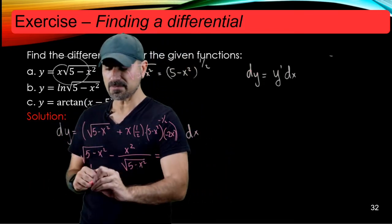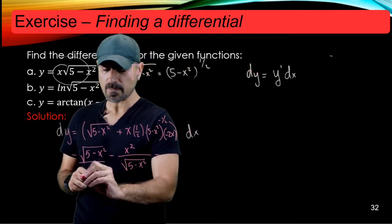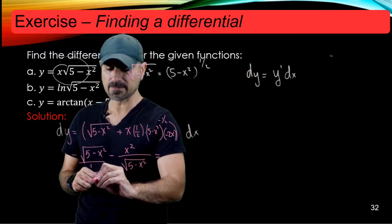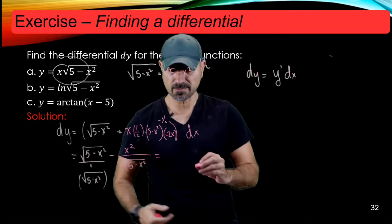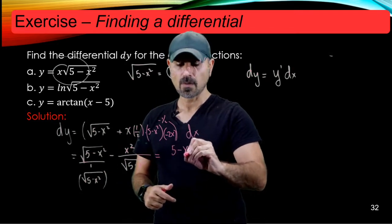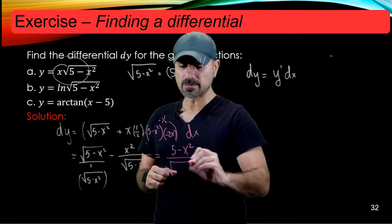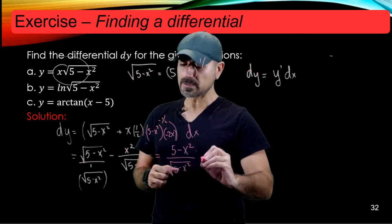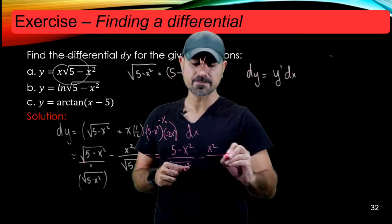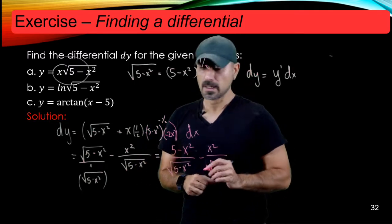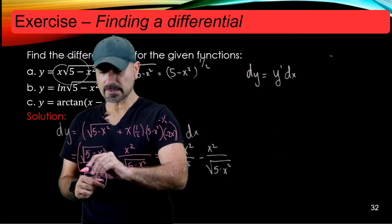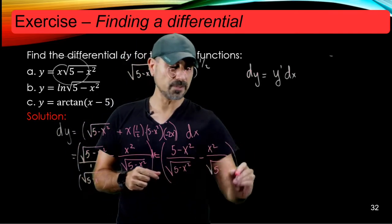So why don't we get a common factor here which is radical 5 minus x squared. Alright, so we're going to multiply the top and the bottom of this by that. So that takes you to 5 minus x squared radical 5 minus x squared minus x squared radical 5 minus x squared. And don't forget by the way the dx here and here as well.